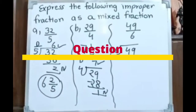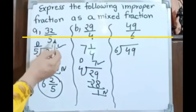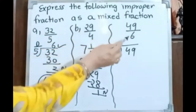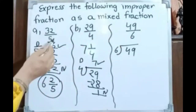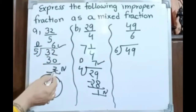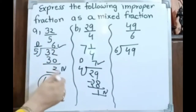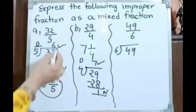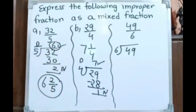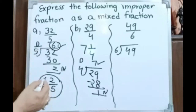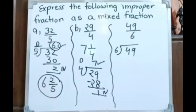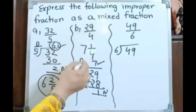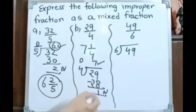Express the following improper fractions as mixed fractions: 32 by 5, 29 by 4, 49 by 6. For 32 divided by 5: we get quotient 6 and remainder 2, so the mixed fraction is 6 whole number 2 by 5. For 29 divided by 4: 4 sevens are 28, remainder 1, so the answer is 7 whole number 1 by 4.